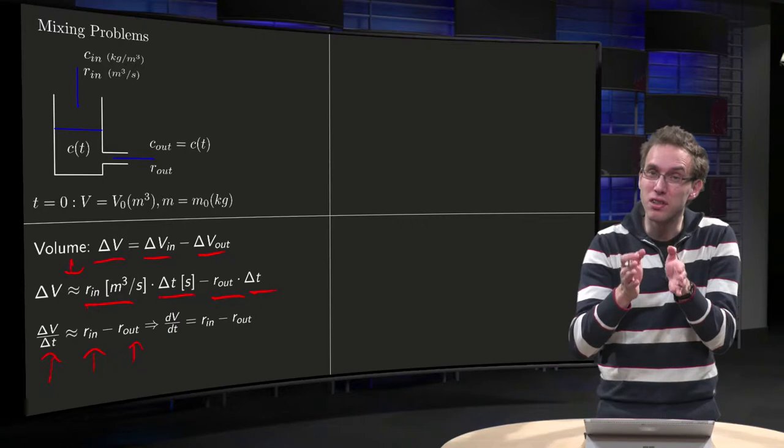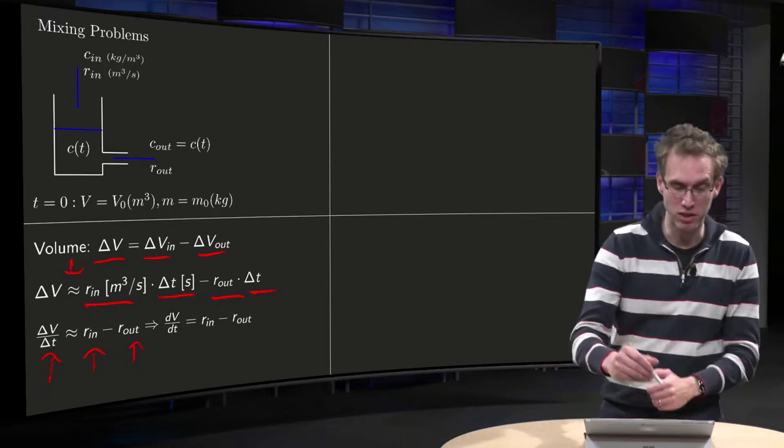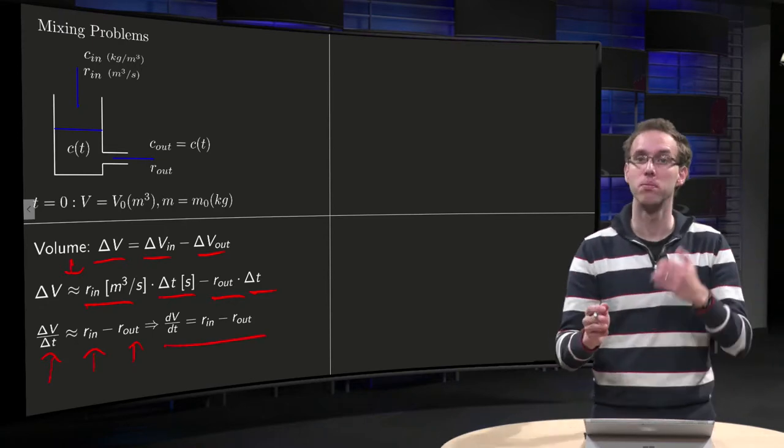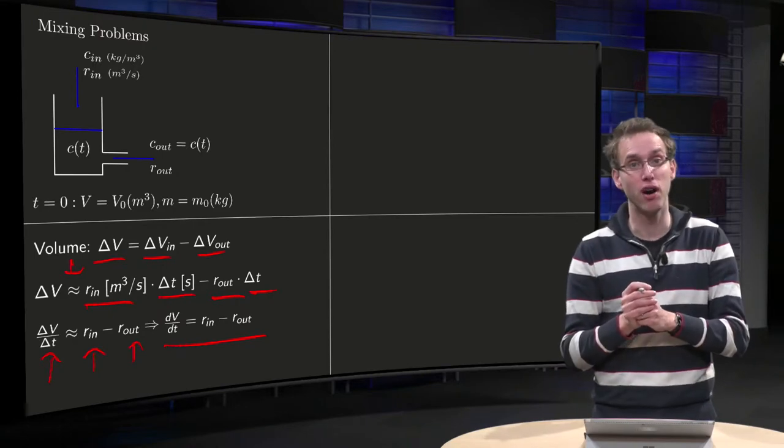If you take a delta T very, very small, they become constant in the limit delta T to 0, and in that case, dV/dT equals R_in minus R_out. So that will give us the balance for our volume.